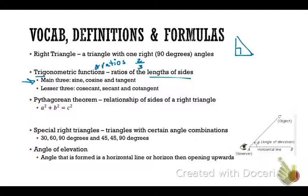And then the lesser three, which are the reciprocal or the flip of the first three, are cosecant, secant, and cotangent. I'll get into specifically what the side lengths are for each of those ratios further on in the notes.